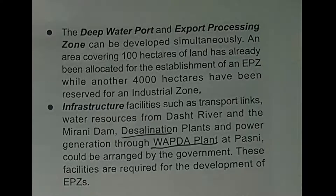Number three: the deep water port and export processing zone can be developed simultaneously. An area covering 100 hectares of land has already been allocated for the establishment of an EPZ, while another 4,000 hectares have been reserved for an industrial zone. This port is very important from an economic point of view, as 100 hectares have been allocated for the EPZ and 4,000 hectares reserved for the industrial zone to develop Pakistan's economic industry.